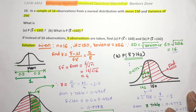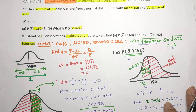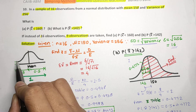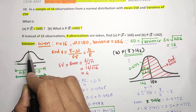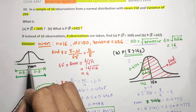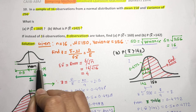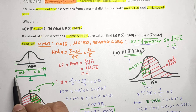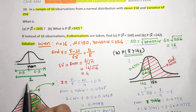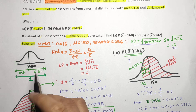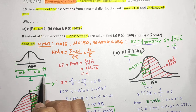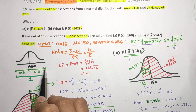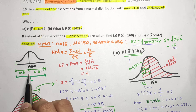Before going to the actual numerical, let's cover some basics. This is the normal distribution curve on a horizontal and vertical axis. The center line is our mean. This half portion has a value of 0.5 and the other half portion is also 0.5, so the total value for the normal distribution is always 1, because the highest probability is 1.